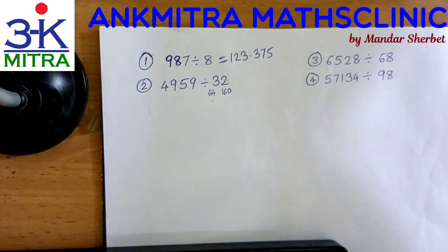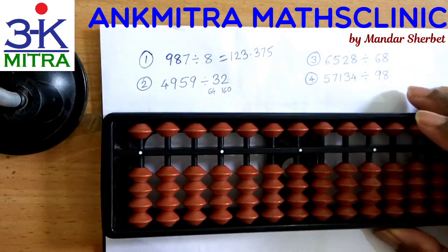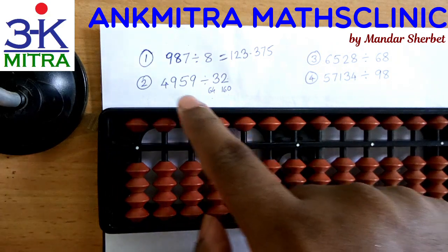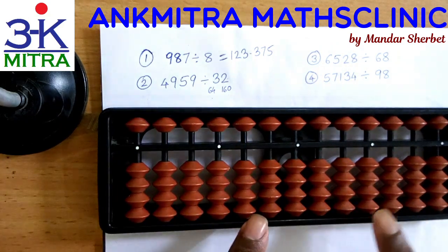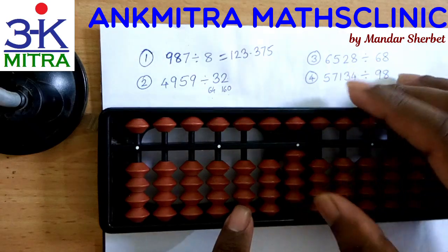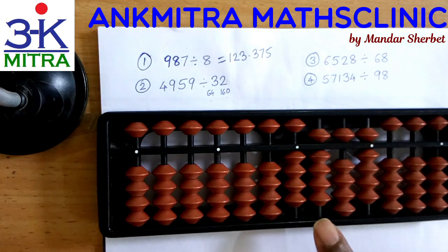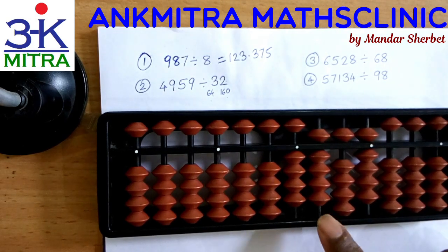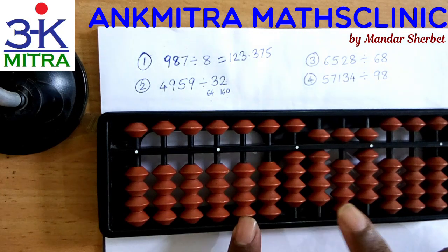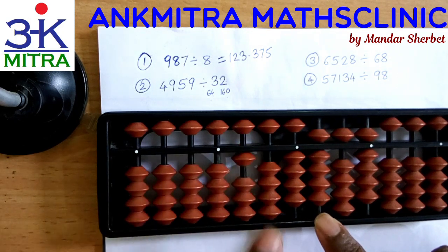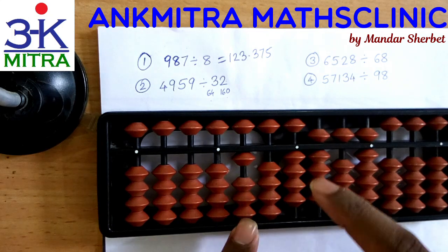Now we'll start the division of 4959 with the two-digit divisor. We'll take 4959 ending on the unit's place rod. Starting with the first two-digit number from the left, which is 49 on the third rod — so the answer will start on the third rod. From 49 we can subtract only 1 times 32, which is 32. So I'll take 1 on the answer set and subtract 32.